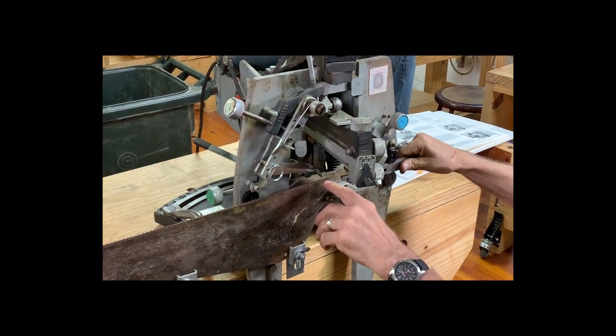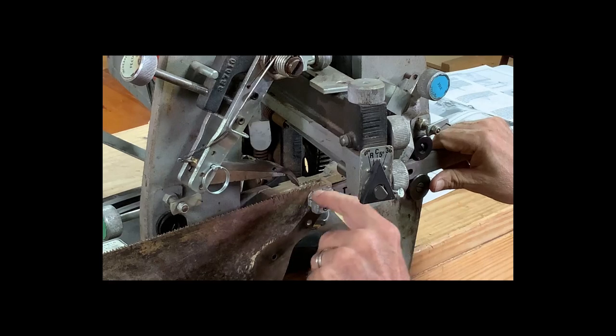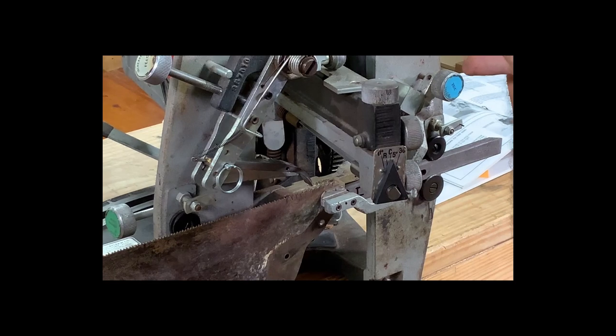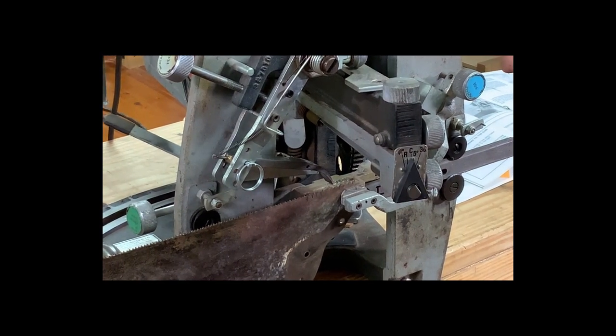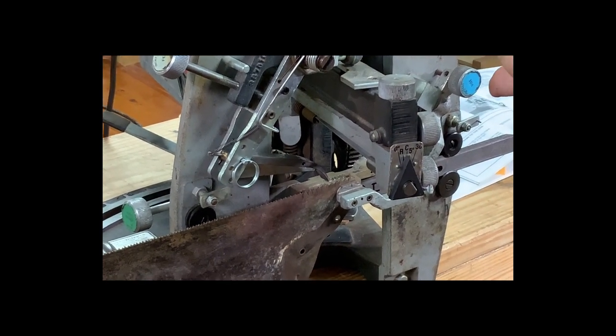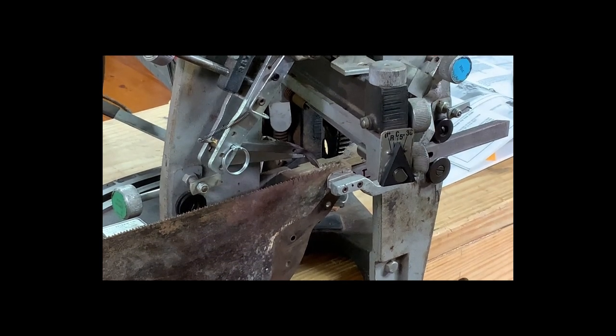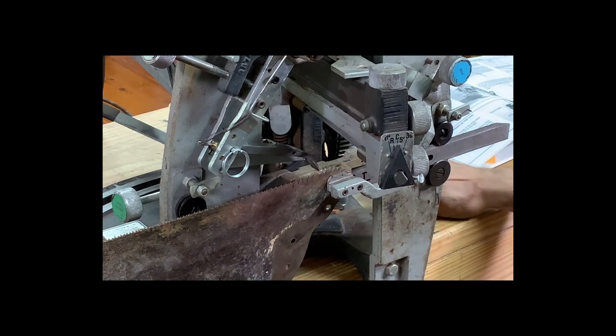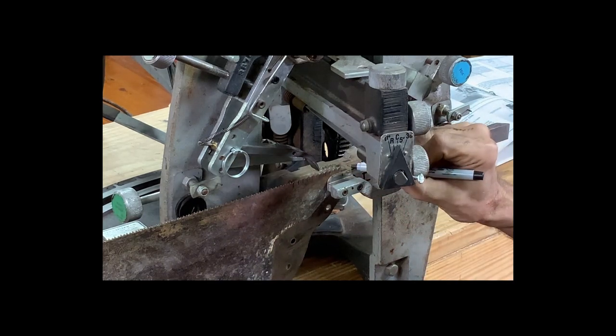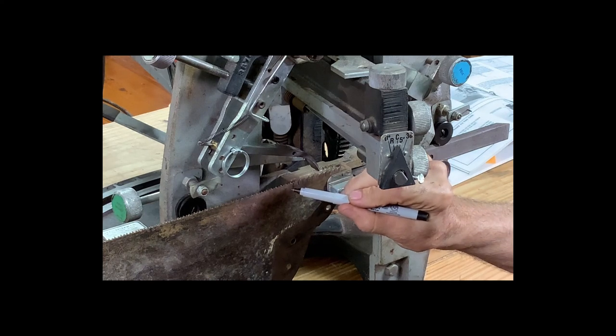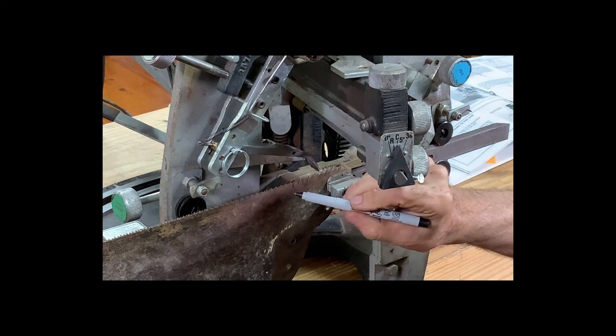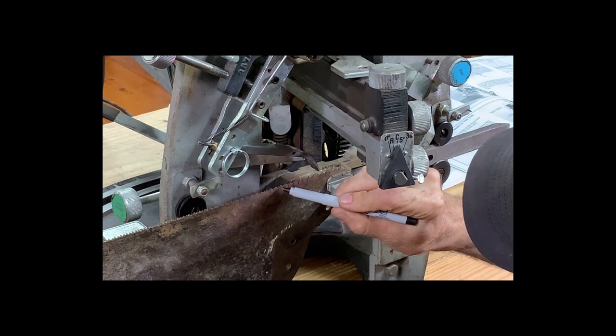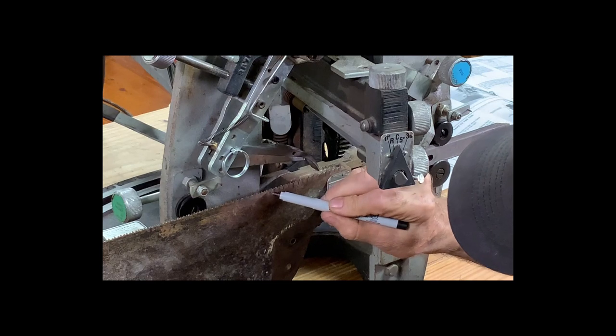One of the first things you do, if you look down in here, I've marked every other tooth. And all teeth on these saws are set like this. One way out on one side, one way out on the other. I've marked a tooth that is facing toward me that is set out toward me. I just put a simple line, a magic marker here, and went down a few this way.